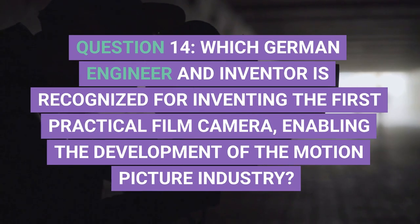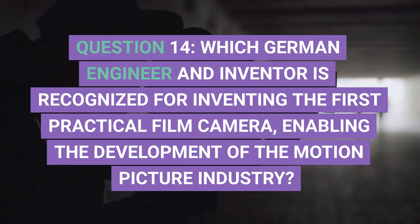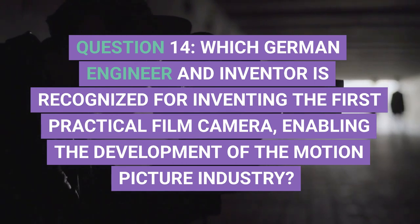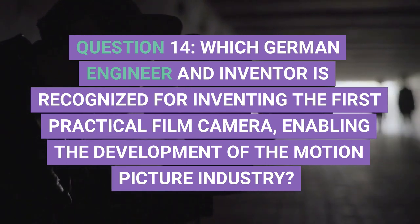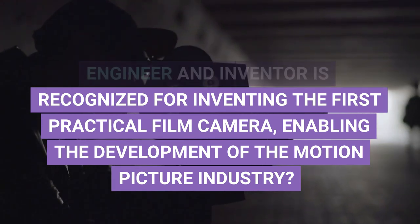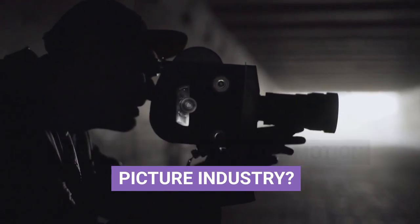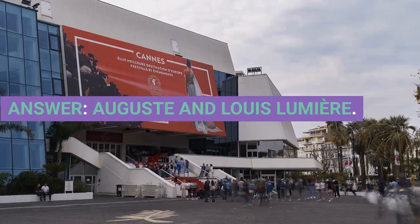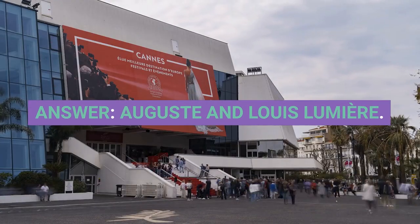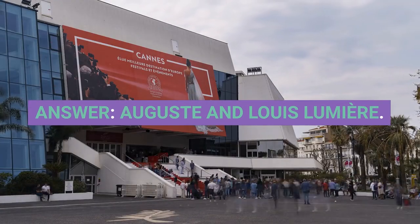Question 14. Which German engineer and inventor is recognized for inventing the first practical film camera, enabling the development of the motion picture industry? Answer: Auguste and Louis Lumière.